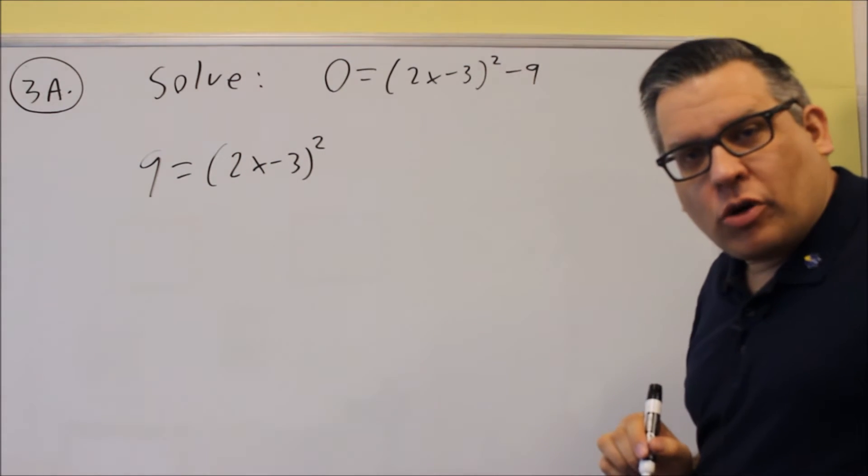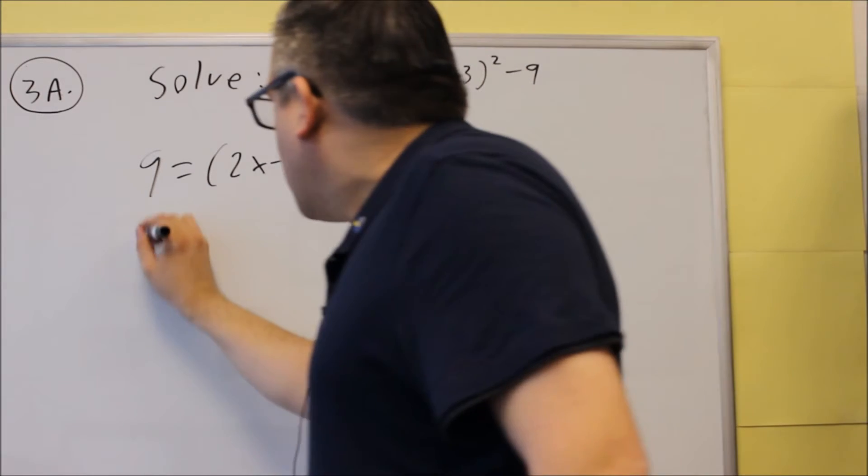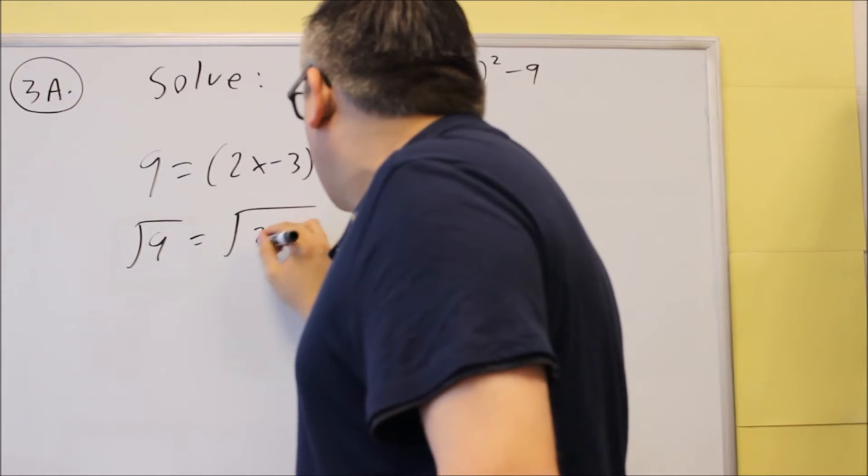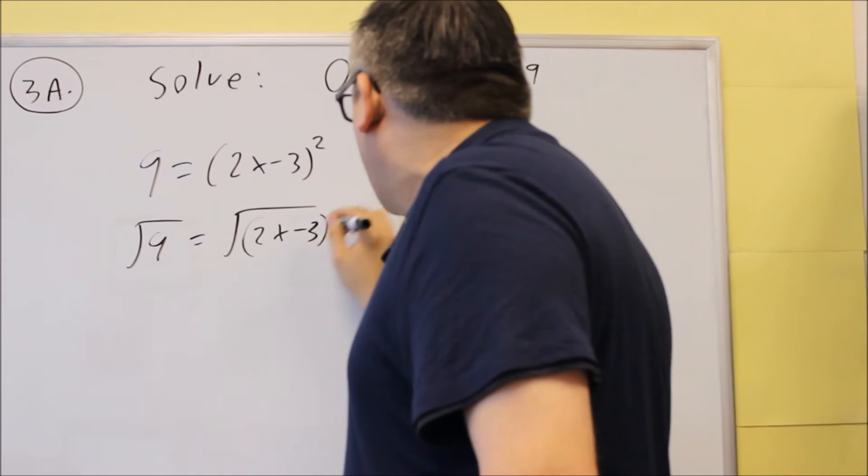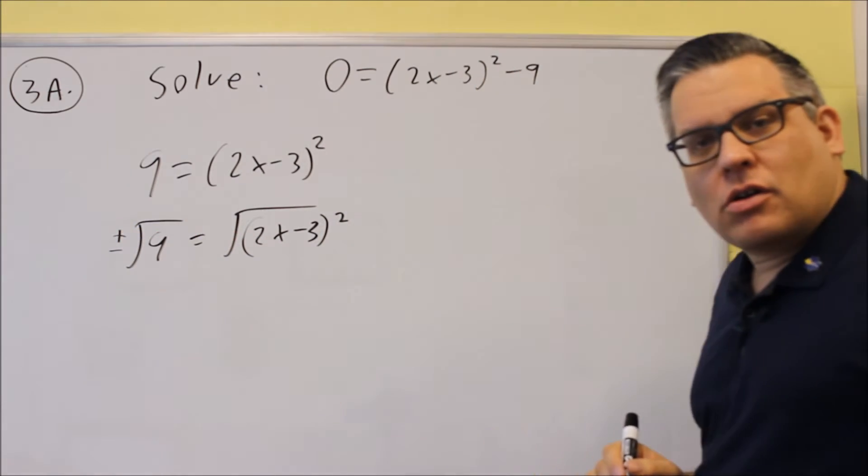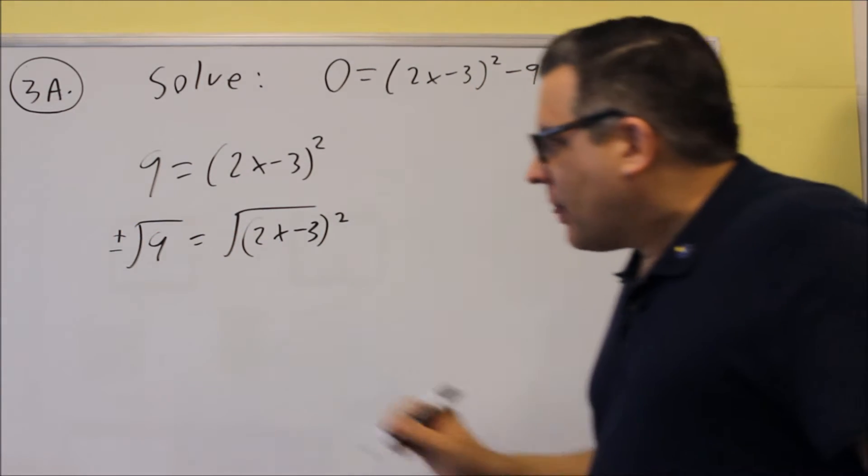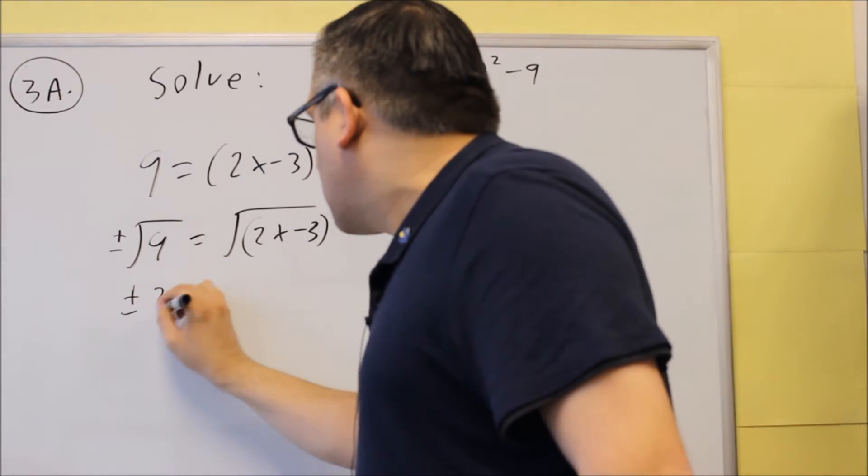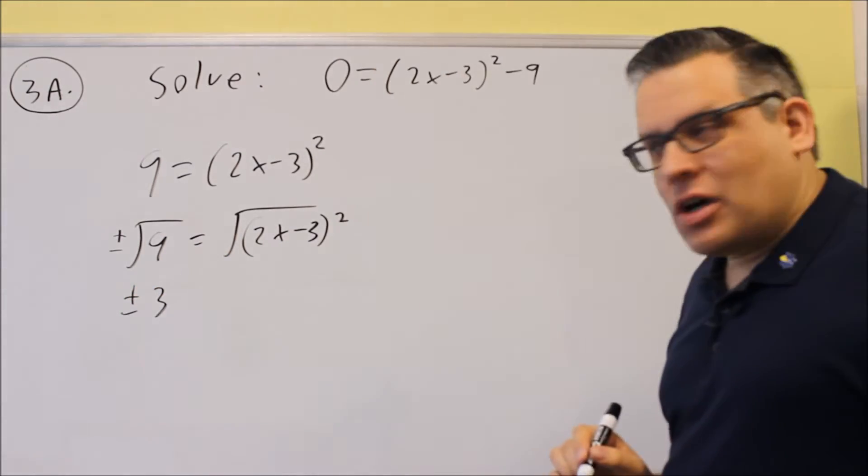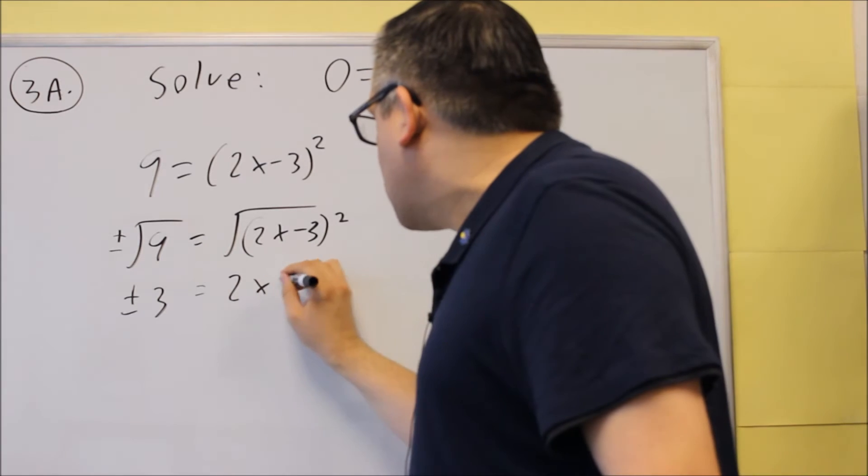Now you want to take the square root of both sides. So we're going to do square root of 9 and square root of (2x - 3)². Don't forget about the plus or minus. The square root of 9 becomes plus or minus 3, and this is going to be just 2x - 3.